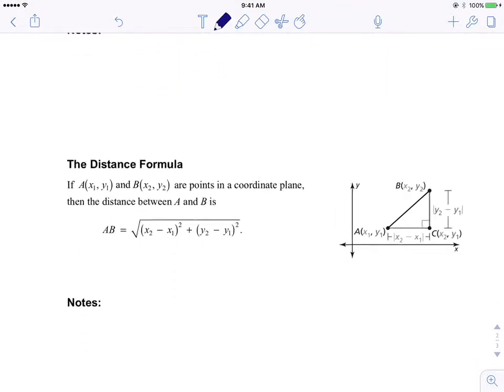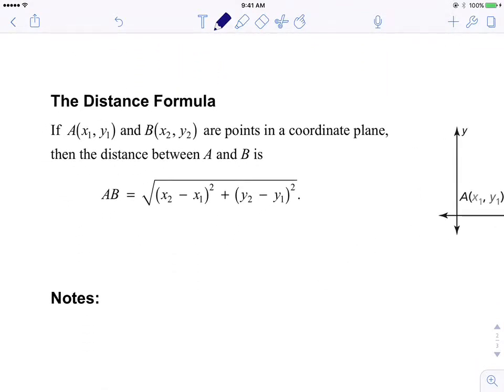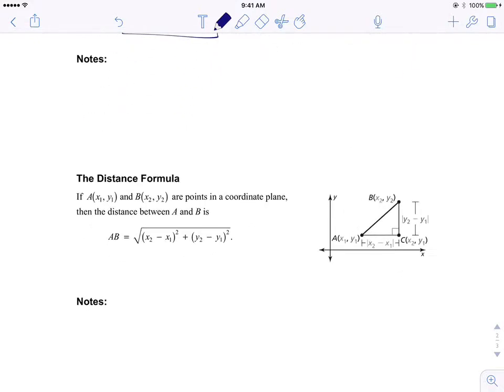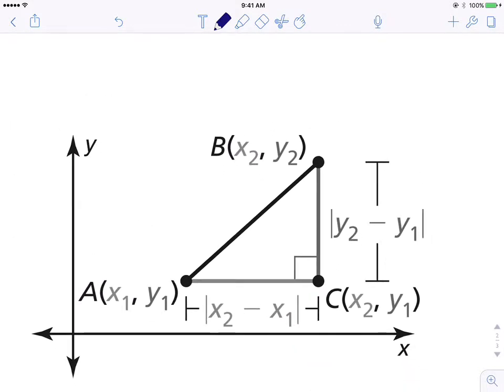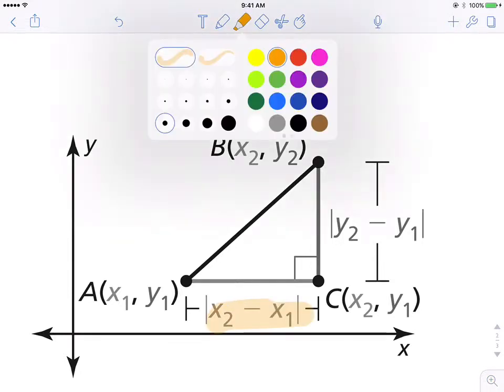And then the last one is this distance formula. We also had an exploration on that. Here it is. It says the distance formula. If point A and B are points in the coordinate plane, then the distance between A and B is AB equals the square root of x2 minus x1 squared plus y2 minus y1 squared. That is the formula. And it's derived from the Pythagorean theorem. And again, here is a picture of that situation.